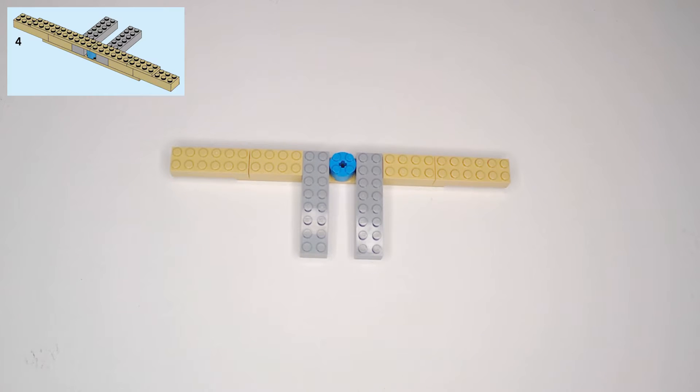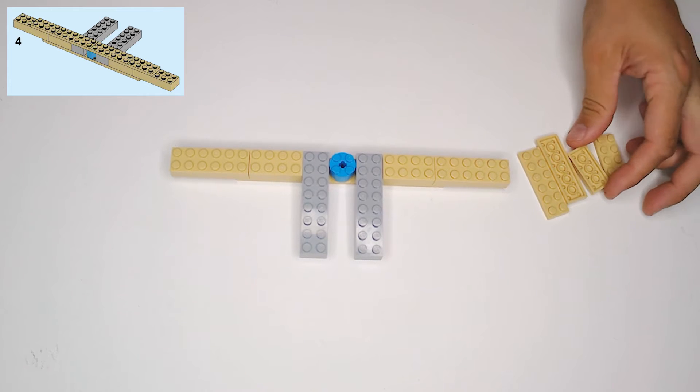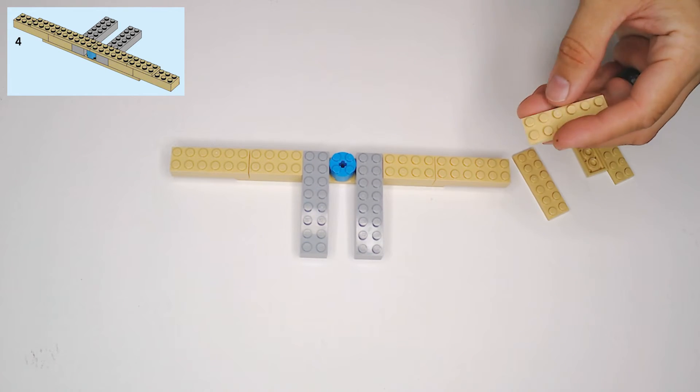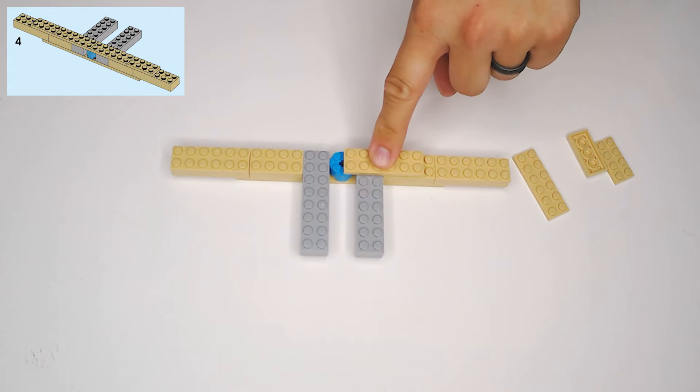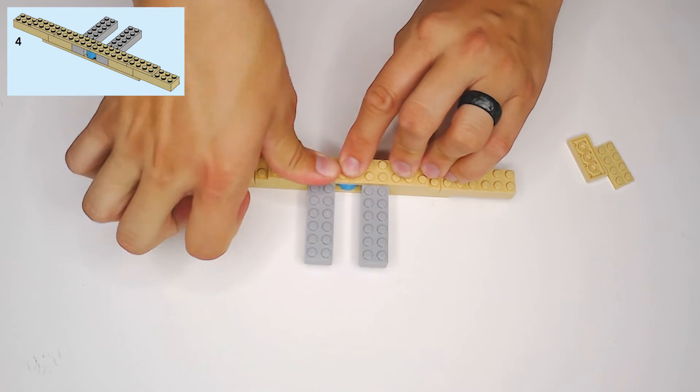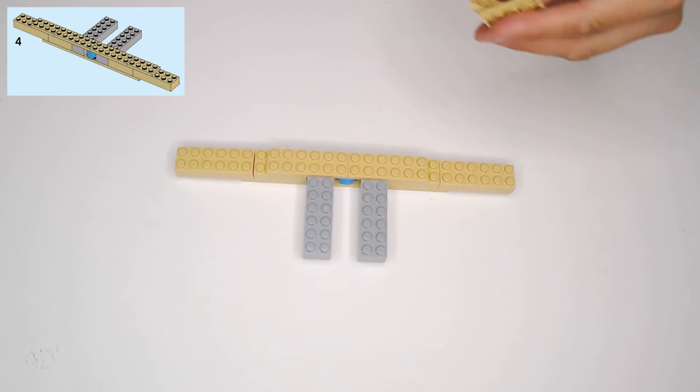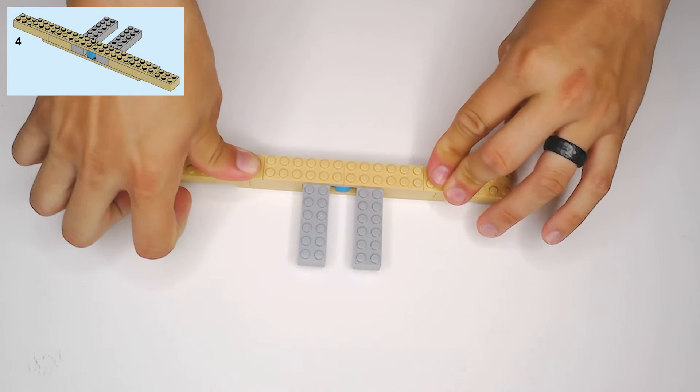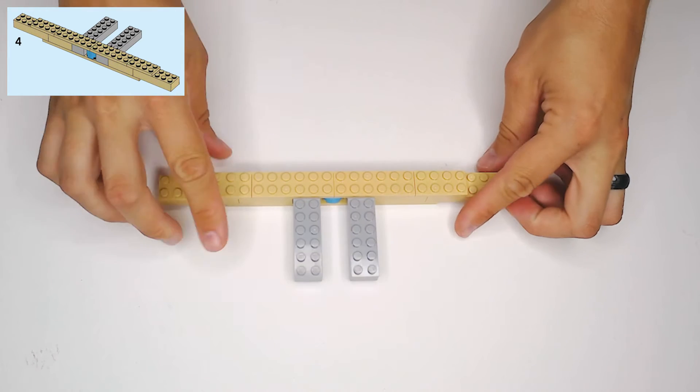And then we're going to step four, where we need two of these 2x6 plates, just tan plates, and two 2x4 plates in tan, and we're going to do them the opposite. So the 2x6s are going to go in first, end to end, meeting in the middle over the teal round piece, and then the 2x4s are going to go off the ends of that to lock in that 2x6 block on each side.